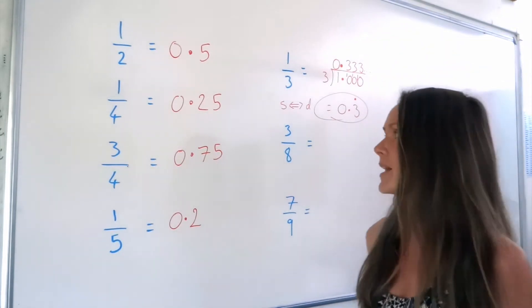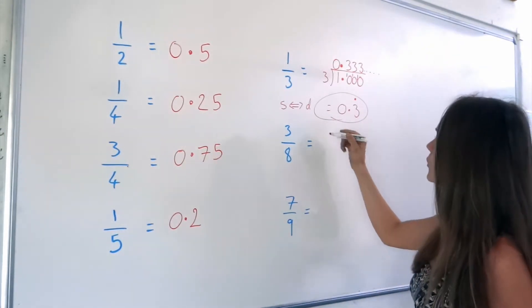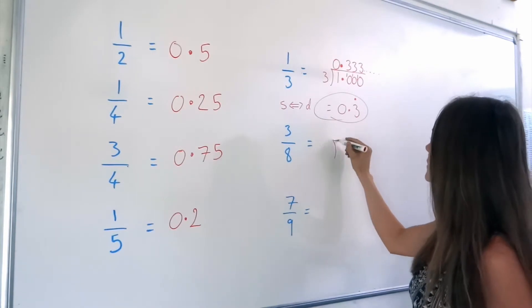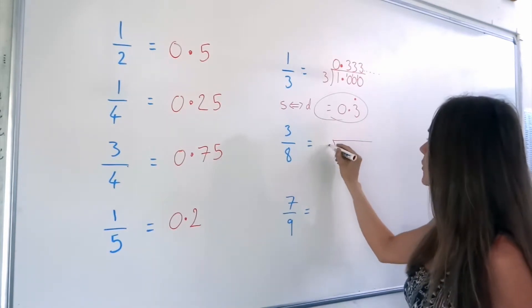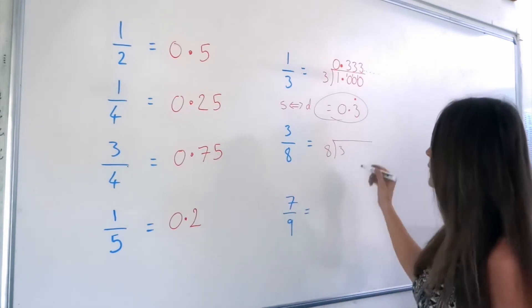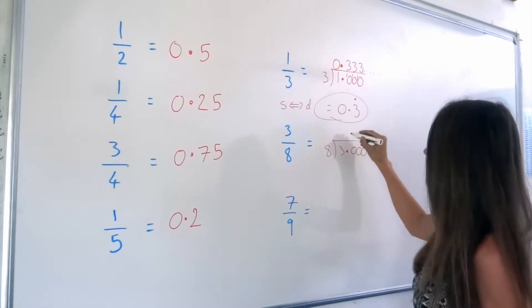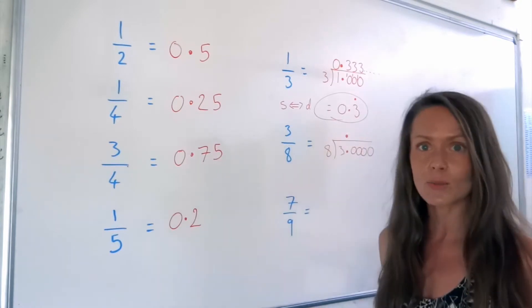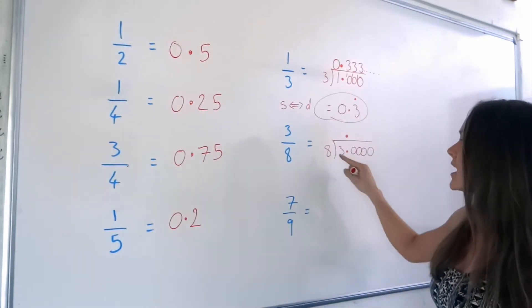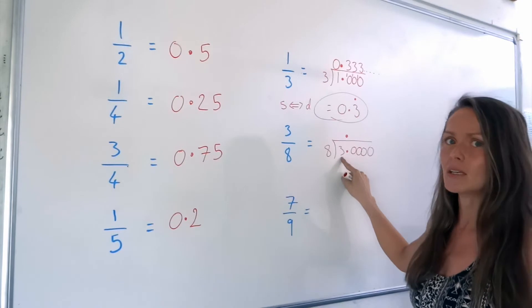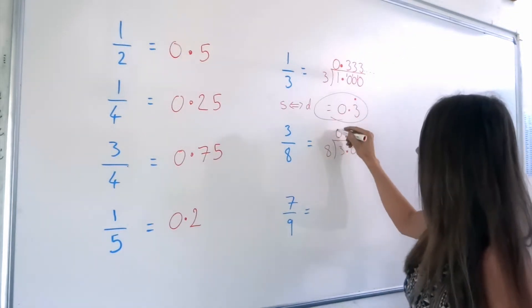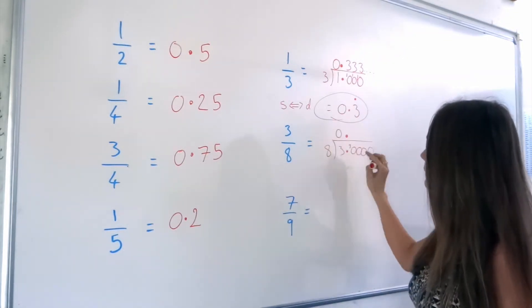Now, the next one. 3 divided by 8. So again, put your numerator inside the divide box and the denominator outside. Don't forget to put your decimal point followed by the zeros, and then the decimal point in your answer as well. So now we can divide. How many 8's in 3? None. So that 3 gets carried over to here, so we've got 30.